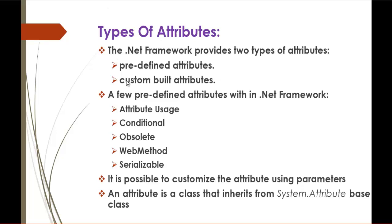Types of Attributes: the .NET Framework provides two types of attributes — predefined attributes and custom-built attributes. Below are a few predefined attributes in the .NET Framework: AttributeUsage, Conditional, Obsolete, WebMethod, Serializable, etc. In this session, we are going to see the Obsolete attribute and how it works. Without wasting time, we will jump into Visual Studio and start coding to see how we use the Obsolete keyword.